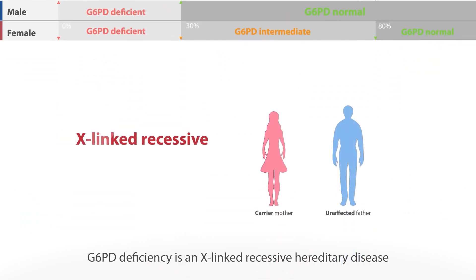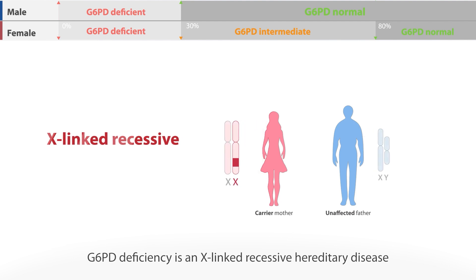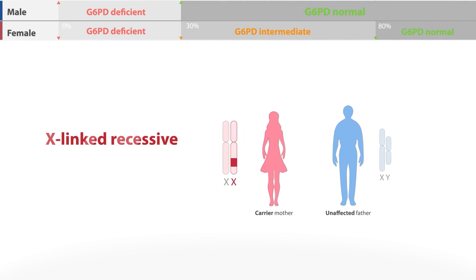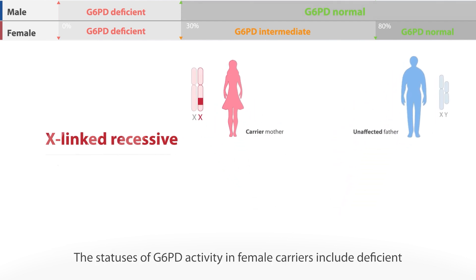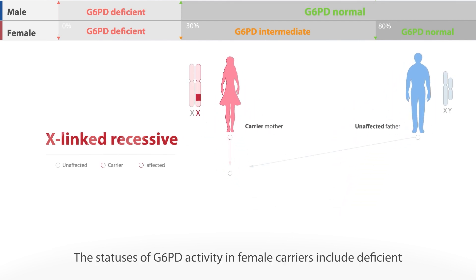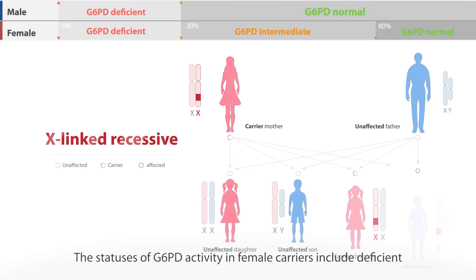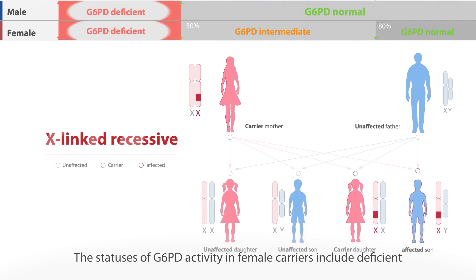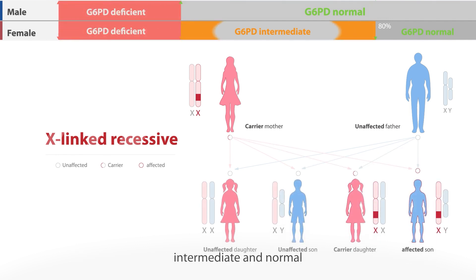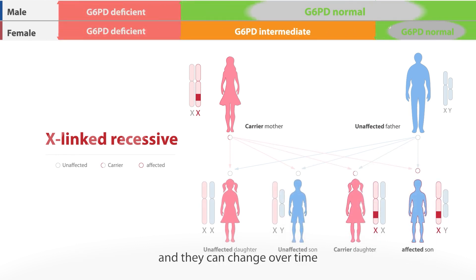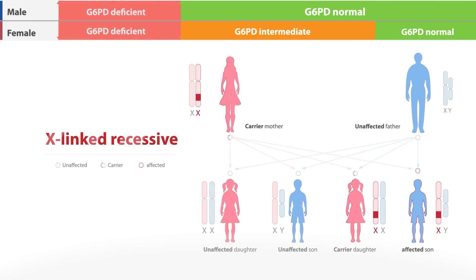G6PD deficiency is an X-linked recessive hereditary disease. The G6PD activity statuses in female carriers include deficient, intermediate, and normal, and they can change over time.